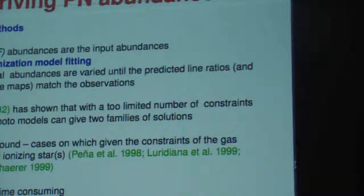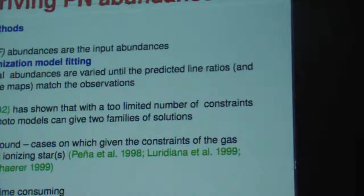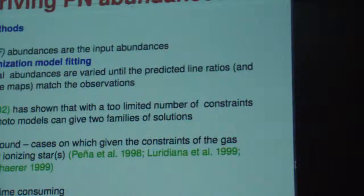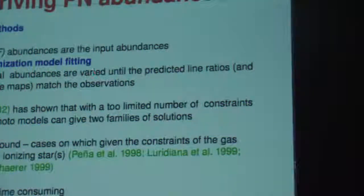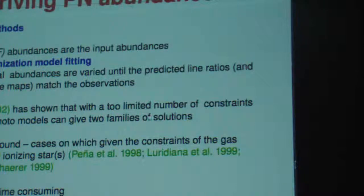The other method we have is the photoionization modeling approach. What you do in this case is use empirical models and vary their values to get a match between the observed spectrum and also the emission line fluxes. But you need a number of input parameters for this model. Using these, you can get the total abundances of the object. However, sometimes you have more than one family of solutions that match your data, giving you more than one set of abundances, which is not ideal.